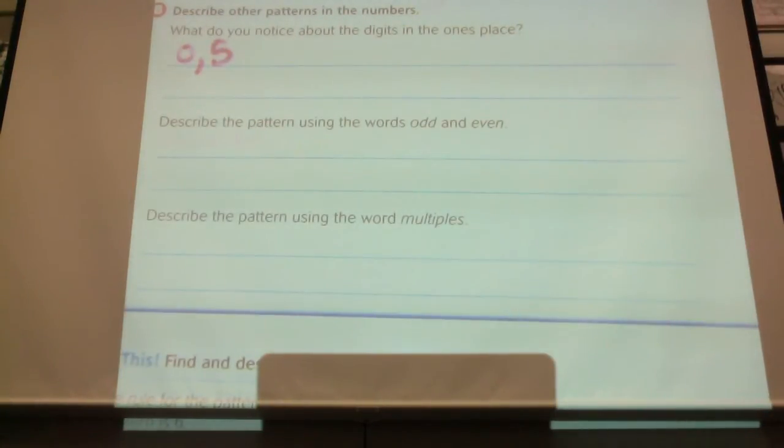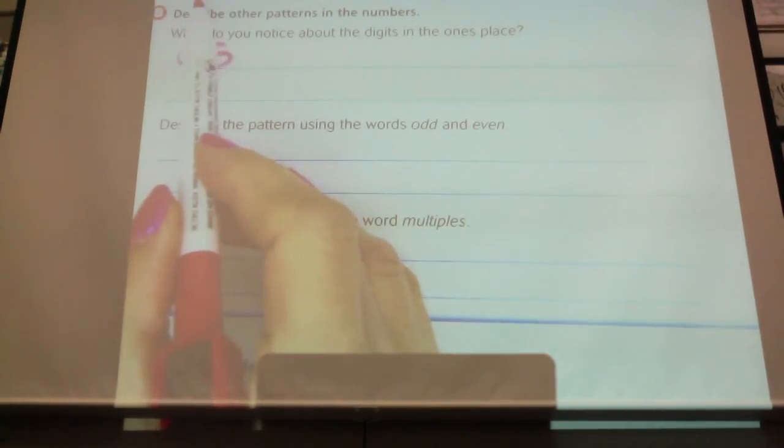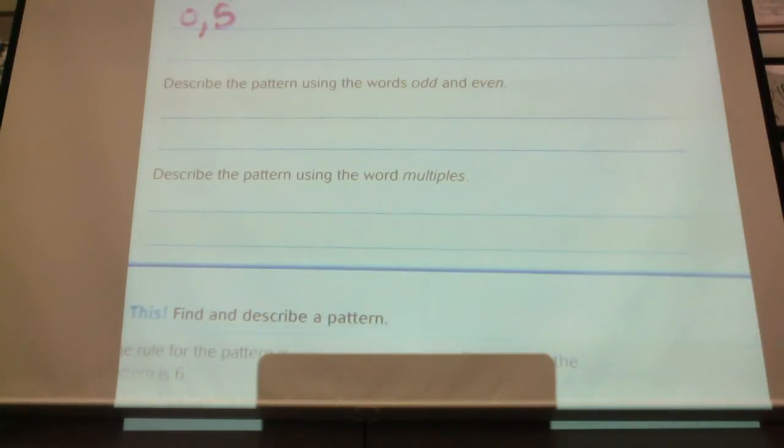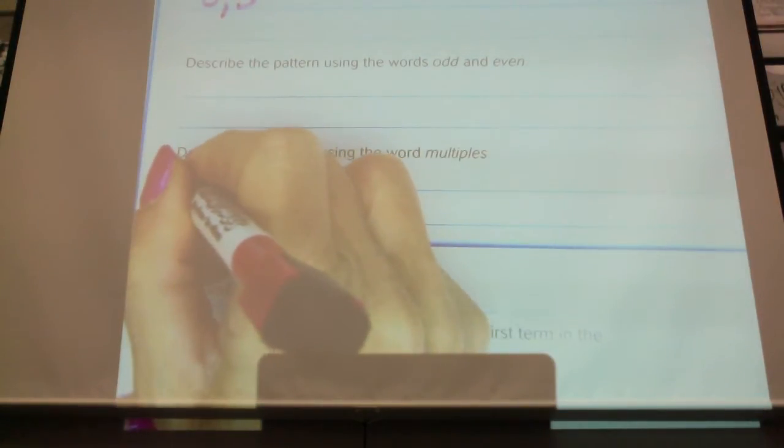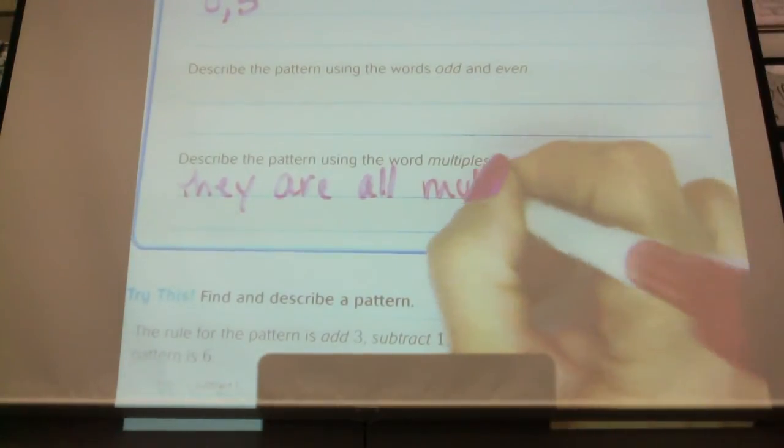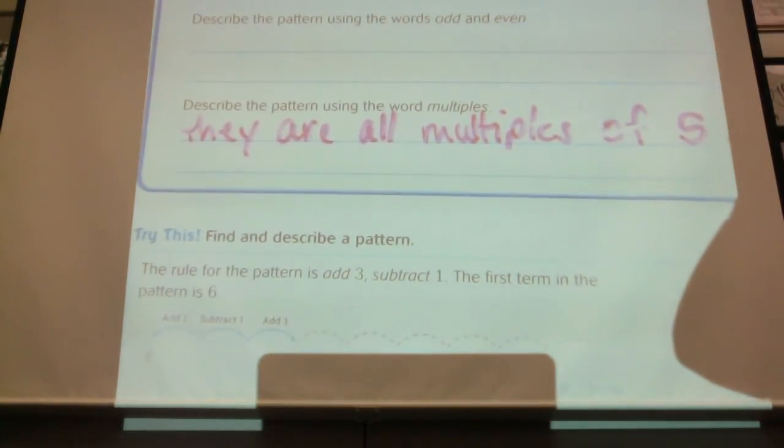Who would like to share the pattern, how they describe the pattern using the words odd and even? Luna. The pattern goes odd, even, odd, even, or even, odd, even, odd, whatever. Did anybody do anything different? All right. It does do that. It starts with an odd and even, odd, even. Okay. Either one of those would work. All right. How about describe the pattern using the word multiples? Describe the pattern using the word multiples. Describe the pattern using the word multiples, Andy. Describe the pattern using the word multiples of five. So if you have not written down something on those two, you need to get that done real quick, and then we're going to go ahead and start on the next one.